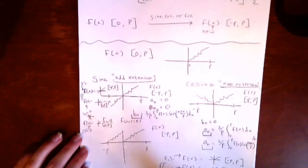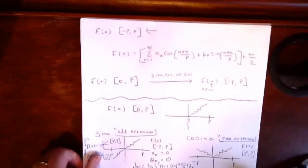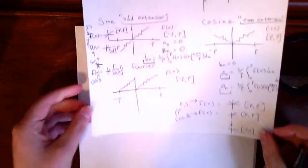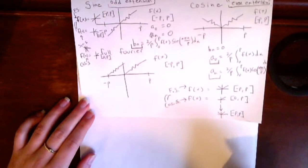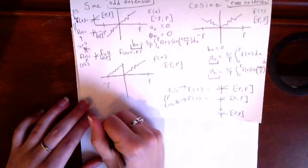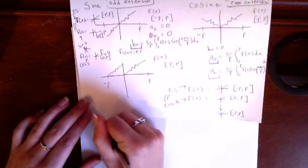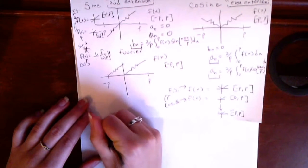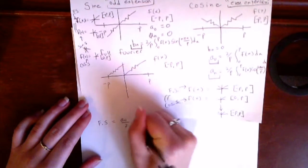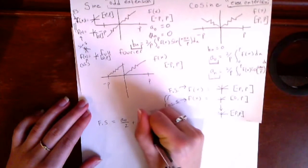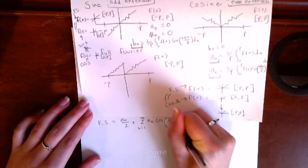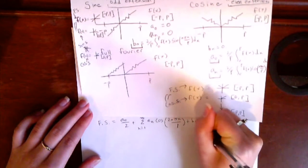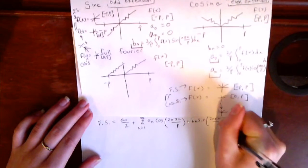While the Fourier coefficients of the sine and cosine extensions are the same as the Fourier coefficients used normally for a periodic function, this is not true for the full Fourier extension. With the full Fourier extension, you are given a function that is neither even nor odd, and due to its periodicity, it has an extra factor of 2 in the sine and cosine functions. So your new Fourier series expansion looks like: a₀/2 plus the sum from n=1 to infinity of a_n sin(2nπx/p) plus b_n cos(2nπx/p).